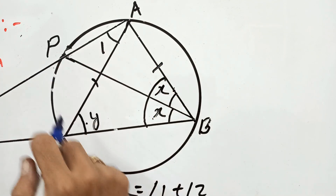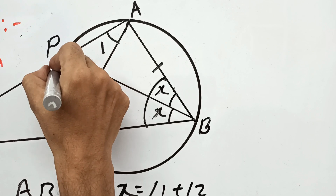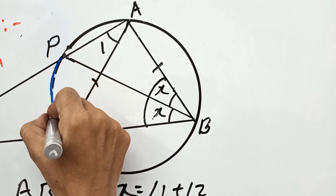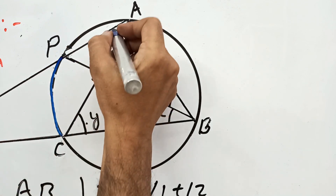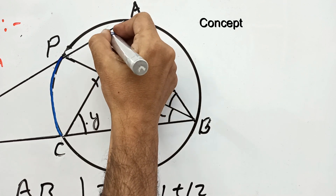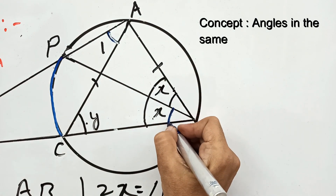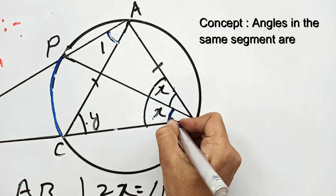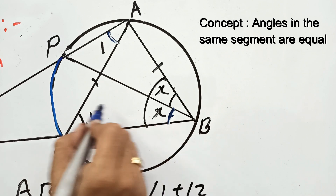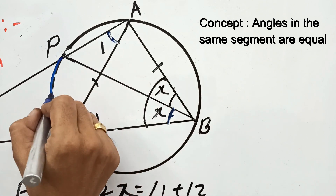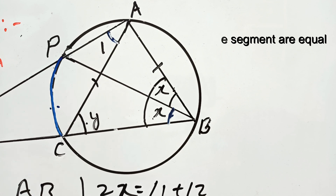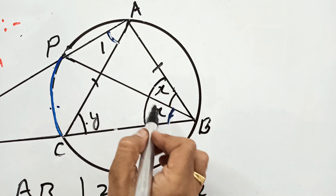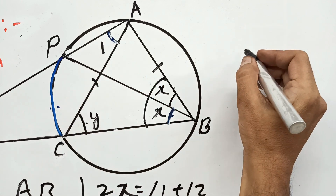Now focus on this segment: the arc PC. There are two angles facing the same arc PC — angle 1 and angle X. Both angle 1 and angle X face the arc PC. By the circle theorem, angles in the same segment are equal. Therefore angle 1 equals angle X.